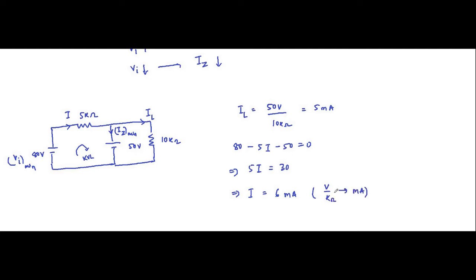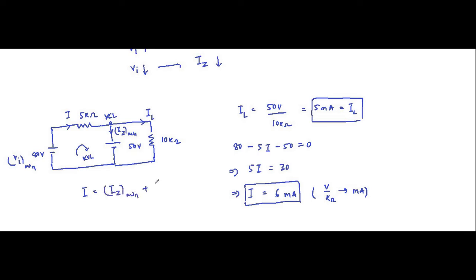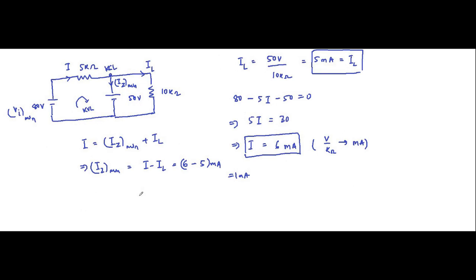The current I is 6 milliampere and the load current IL is 5 milliampere. Applying KCL at the node: I equals IZ_min plus IL. Therefore IZ_min equals I minus IL, which is 6 minus 5 milliampere, equal to 1 milliampere. So the minimum value of Zener current is 1 milliampere, corresponding to the minimum input voltage of 80 volt.